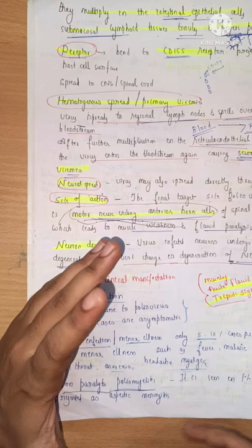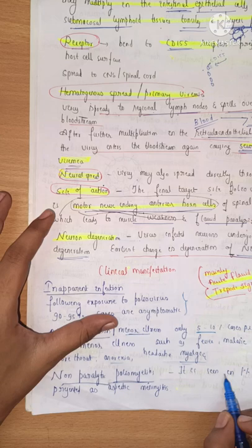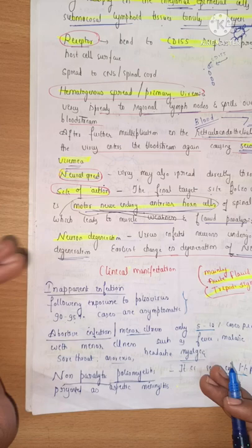If in that stage you are not giving clinical care, it will further progress into non-paralytic poliomyelitis — the third stage. Among this five to ten percent of children who have the abortive infection or minor illness, only one percent of patients present with aseptic meningitis.